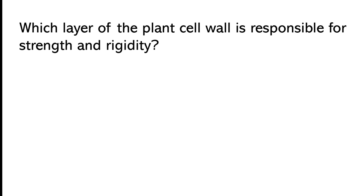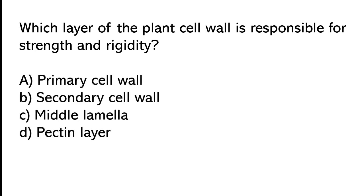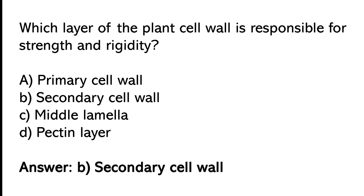Which layer of the flound sil wall is responsible for strength and rigidity? Primary sil wall, secondary sil wall, middle lamella, or fectin layer. The correct answer is option B: Secondary sil wall.